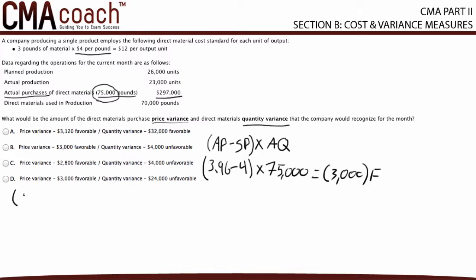Now the quantity variance is calculated as: (actual quantity minus standard quantity for actual output) times standard price. The actual quantity here is the actual quantity used — not the quantity purchased. I'll say that again: the actual quantity is the actual quantity used, not the quantity purchased.